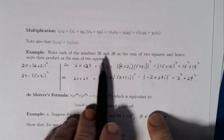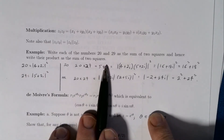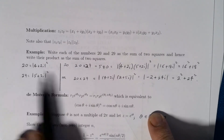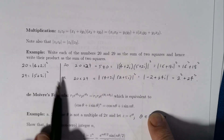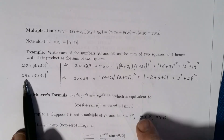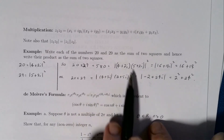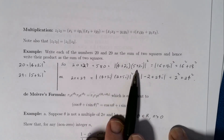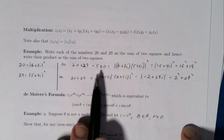An example: write each of the numbers 20 and 29 as the sum of two squares, and hence write their product as the sum of two squares. We write 20 as the square of the modulus of 4 + 2i (since 16 + 4 = 20), and 29 as 5² + 2², the square of the modulus of 5 + 2i. Multiplying the complex numbers gives 16 + 18i, whose modulus squared is 16² + 18², so 580 is written as the sum of two squares.